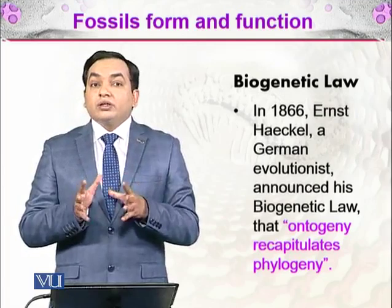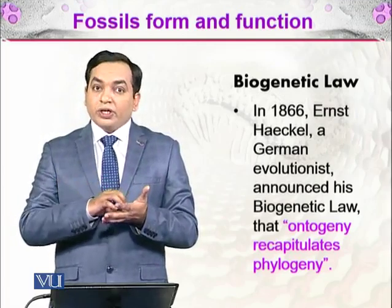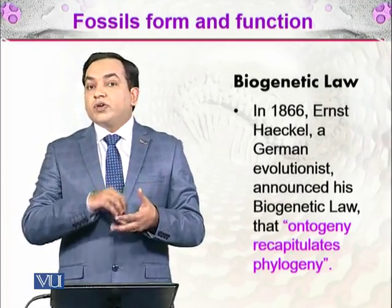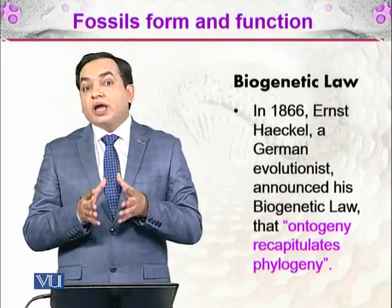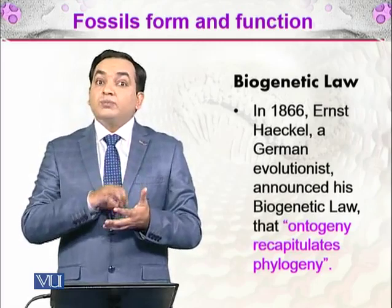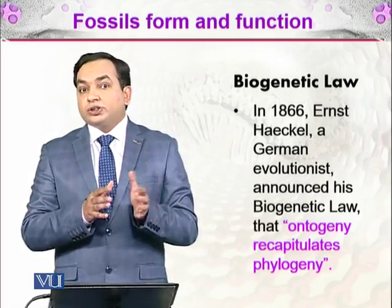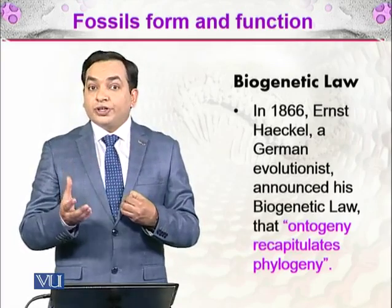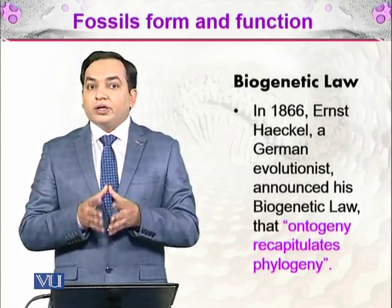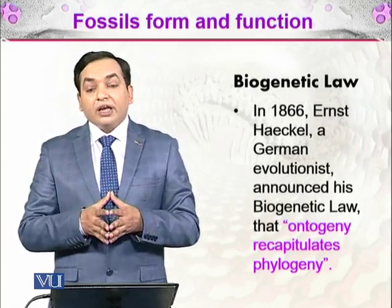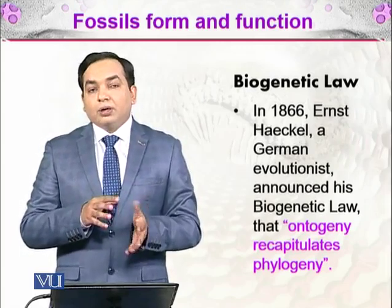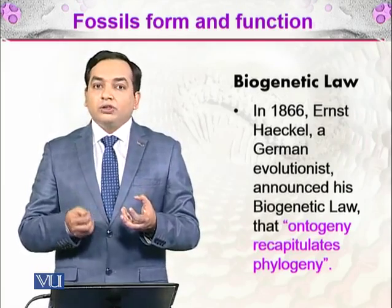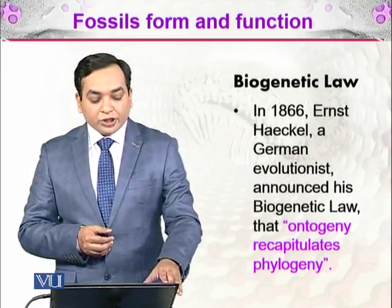Scientists were able to observe different organisms at different larval and developmental stages. Through these observations, they could see that organisms have certain structures that are vestigial — structures that were present in their evolutionary history but are not present in the adult organism. This gave rise to the relationship between ontogeny, the study of development, and phylogeny, the study of evolutionary history.